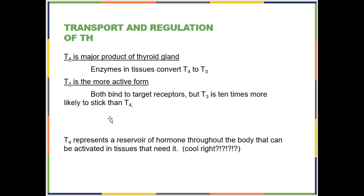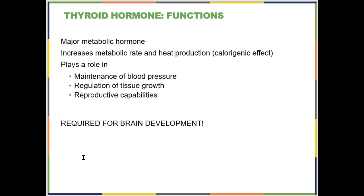Most of what comes out of your thyroid gland is T4 — it is the major product of the gland. However, T3 is the more active form of the hormone; it is better at binding to target receptors and is about 10 times stickier than T4. Enzymes convert T4 to T3 in tissues as it circulates. T4 actually represents a reservoir of hormone that circulates throughout the body, and when tissues need T3 they can generate their own T3 from circulating T4 locally — a way to geographically control levels of active thyroid hormone.